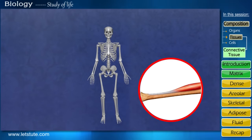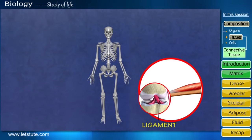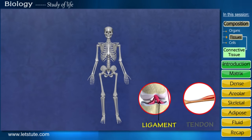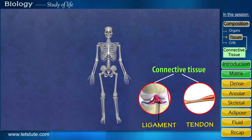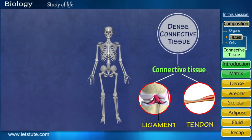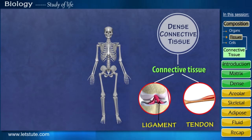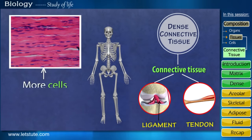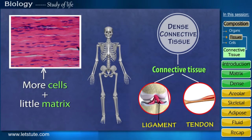Both the ligament and the tendon are a type of connective tissue called dense connective tissue, because the cells in this tissue are densely packed together with very little matrix.